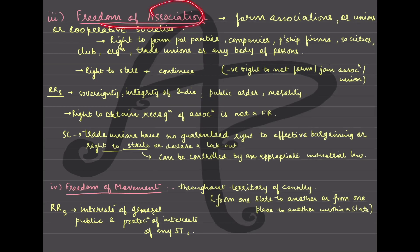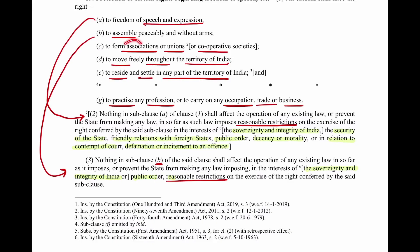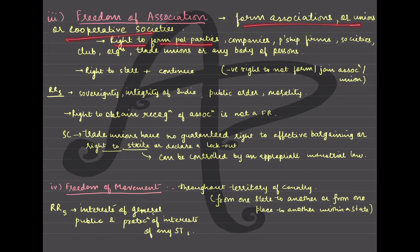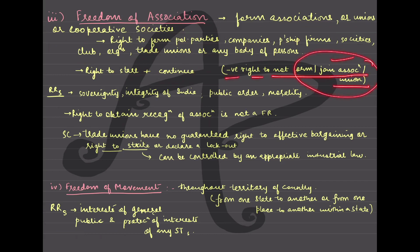Freedom of assembly is done. Now we have freedom of association. The constitution says citizens have freedom to form associations, unions, or cooperative societies - all of these are allowed. This includes the right to form political parties, companies, partnership firms, societies, clubs, organizations, unions, trade unions, or any other grouping of persons, and cooperative societies were added later by amendment. You have the right to start any association and continue with any association.